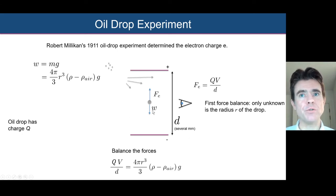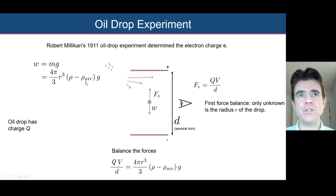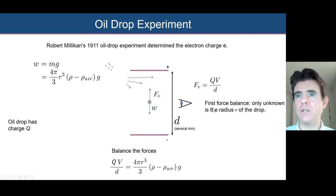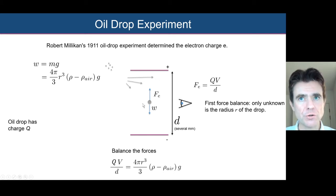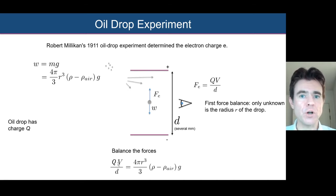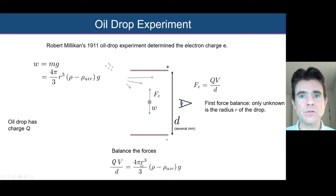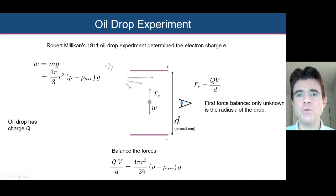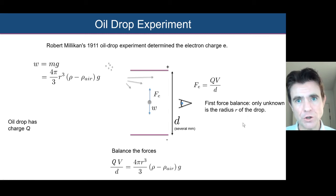There is a small modification needed because this is in air: there is an upthrust, so we subtract off the density of the surrounding air. That's a minor adjustment to make a more accurate measurement. This is the first force balance. The only unknowns are Q — the charge on the oil drop, which we assume to be composed of integer numbers of the fundamental unit of charge — and the radius R. We know the voltage, d, pi, the density of oil and air, and g. So we need another force balance equation to solve for R.